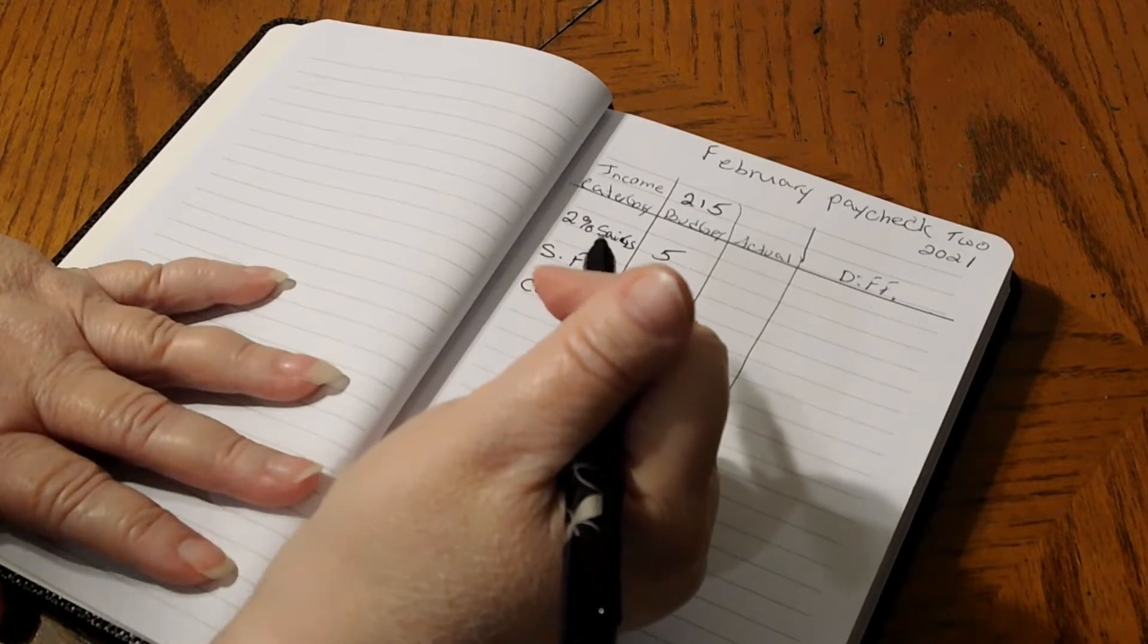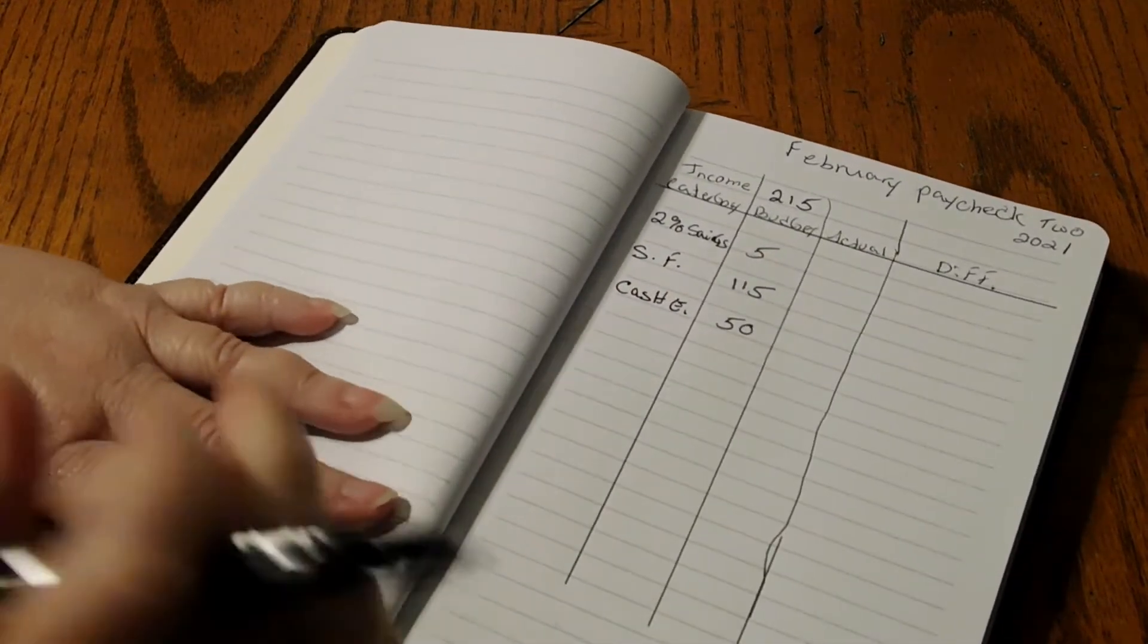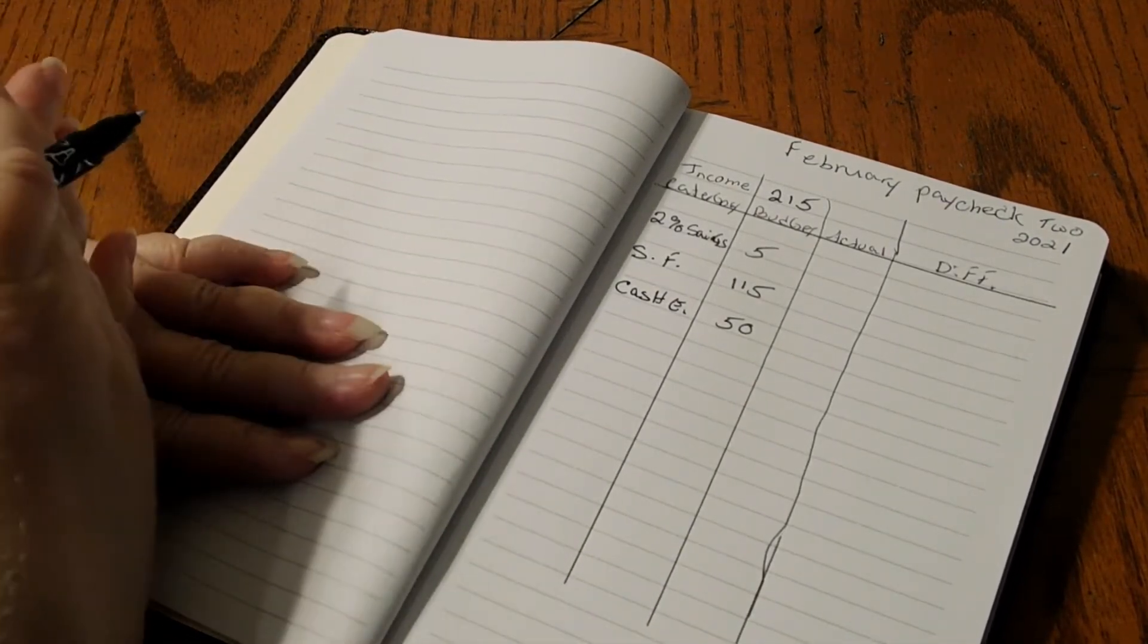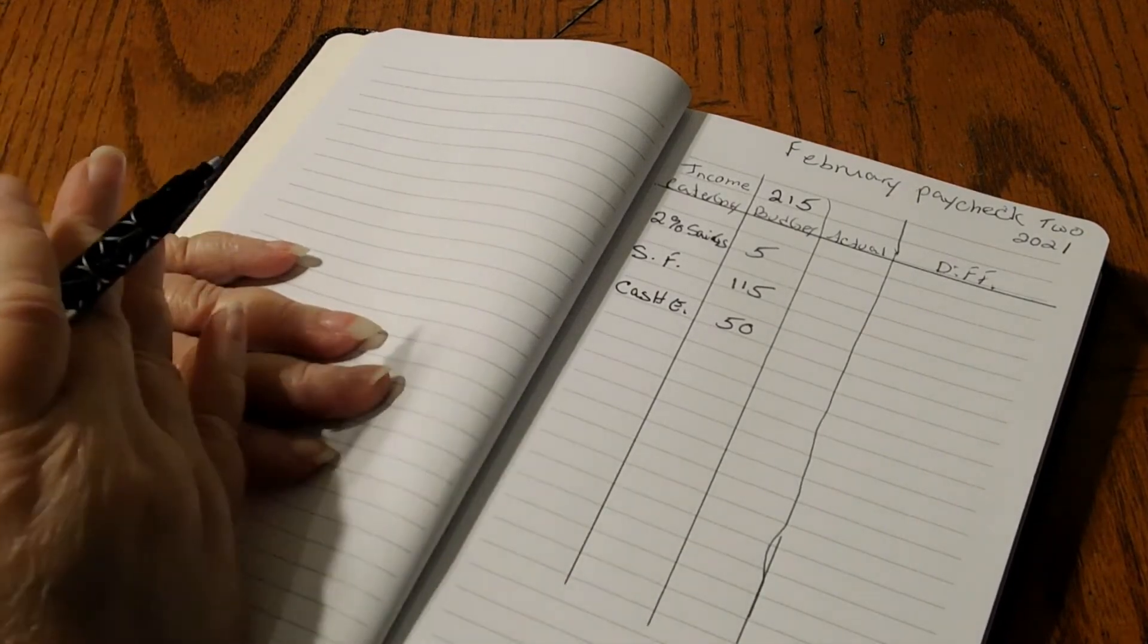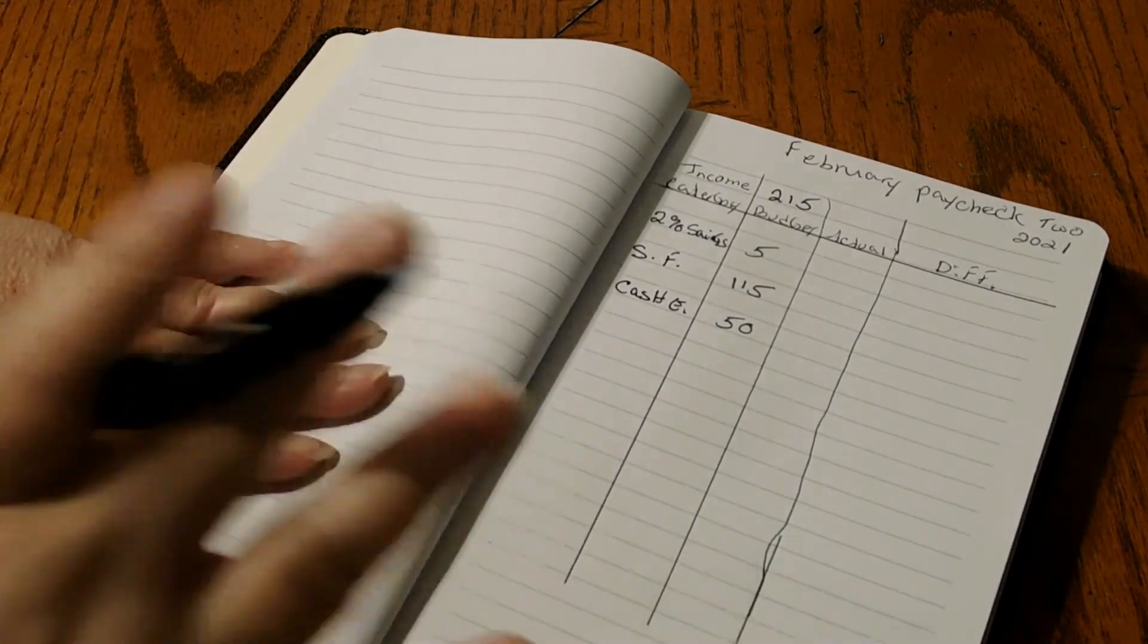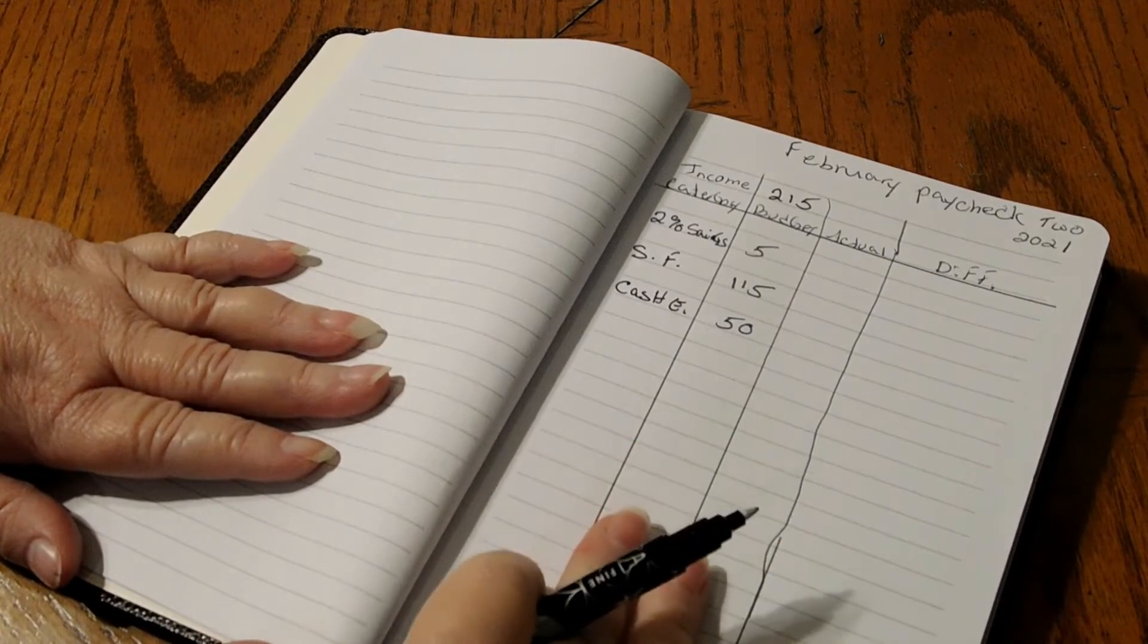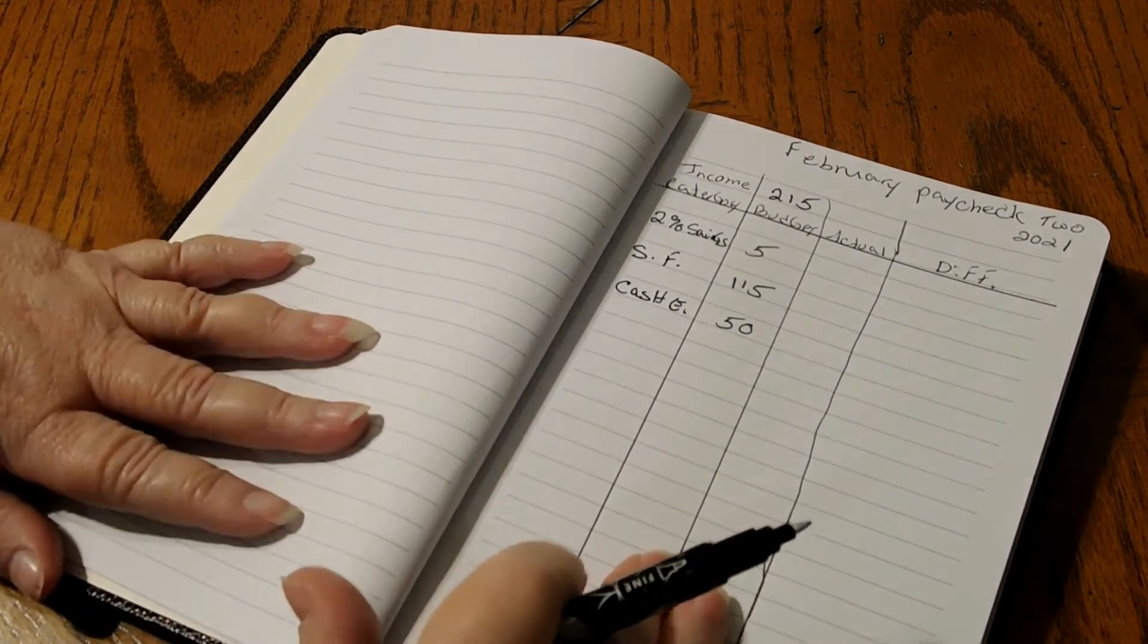So we're not going to do a buffer for the simple reason I took out of the first paycheck, paycheck one, I took $100 out for the buffer. I'm hoping that $100 will be for the whole month of February. So far I haven't touched it, there's still the $100 in there. So I'm not going to take out any kind of a buffer in paycheck two because we have enough from paycheck one that's still in the bank.